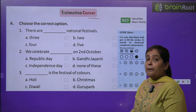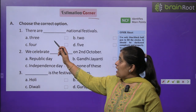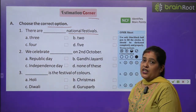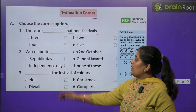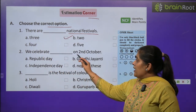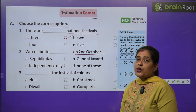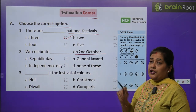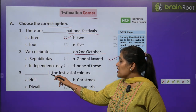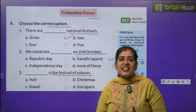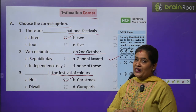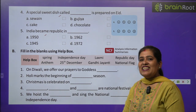Estimation corner — we will do some exercises. Exercise A: Choose the correct option. Number 1: There are ___ national festivals — कितने national festivals होते हैं? Answer: 3. Number 2: We celebrate ___ on 2nd October — answer is Gandhi Jayanti. Number 3: ___ is the festival of colors — रंगों का त्योहार कौन सा है? Answer: Holi. Numbers 4 and 5 you will do by yourself.